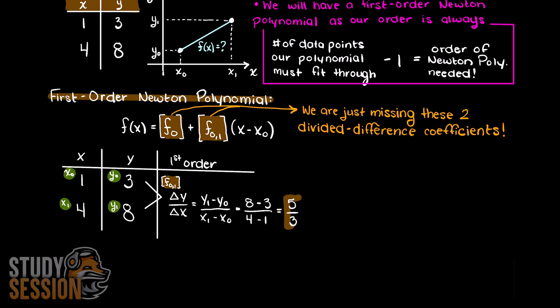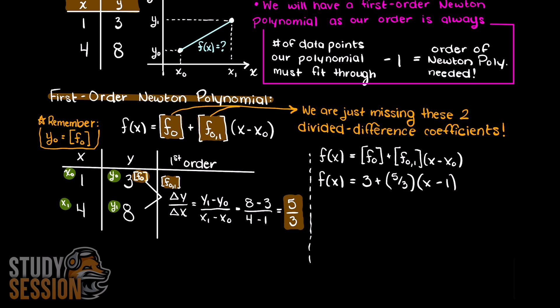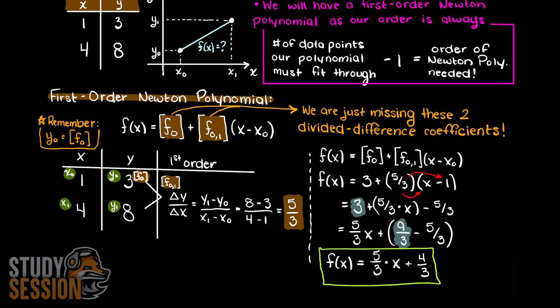Applying this newly found coefficient, and remembering that the divided difference of 0 is simply y0, we can go ahead and solve and simplify for our Newton interpolating polynomial, which is 5 over 3x plus 4 over 3.